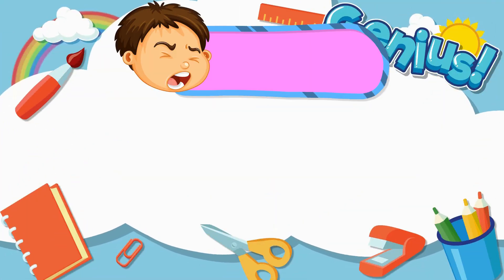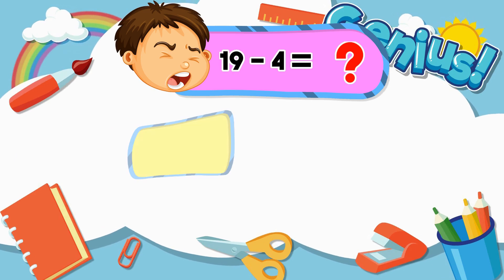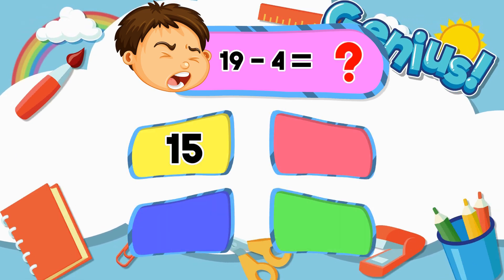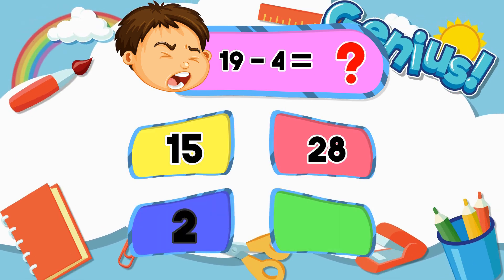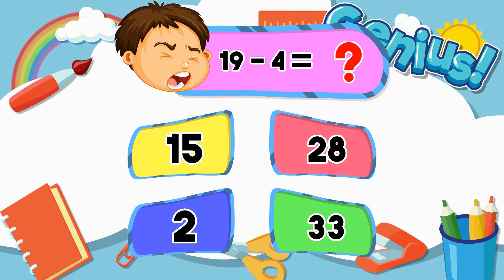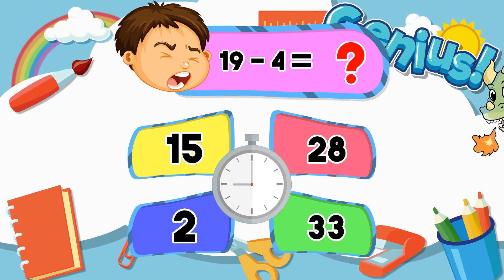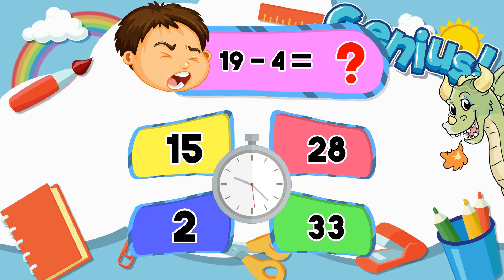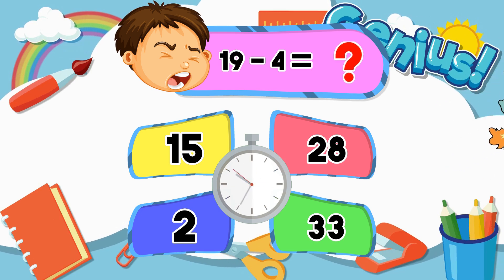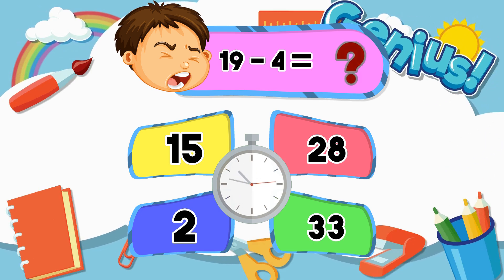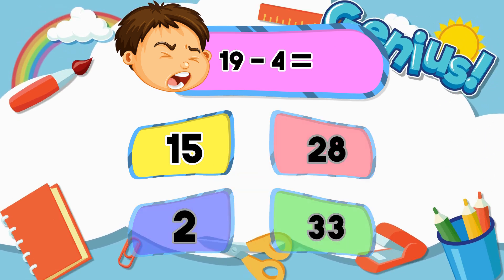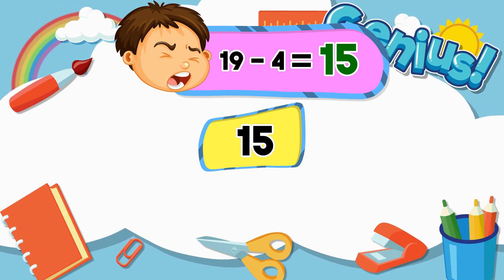What is 19 minus 4? 15. 28. 2. 33. Correct answer: 15.